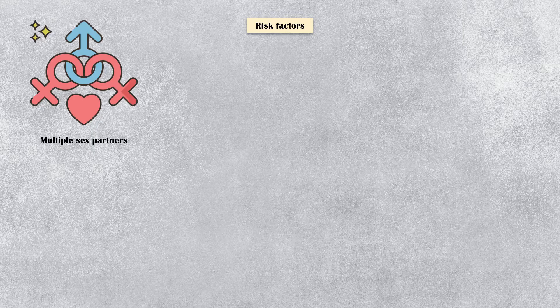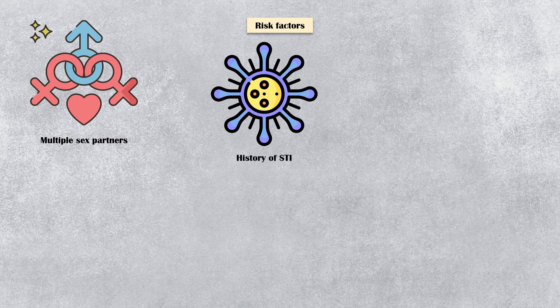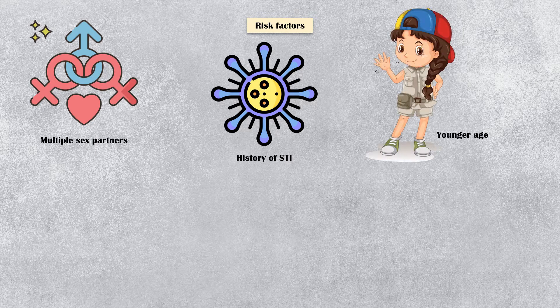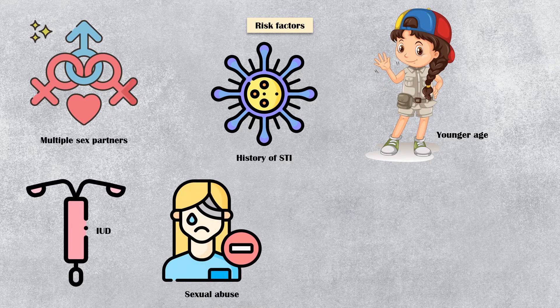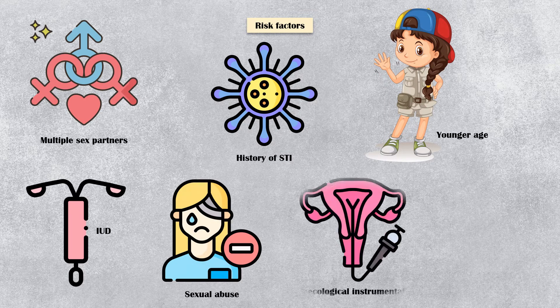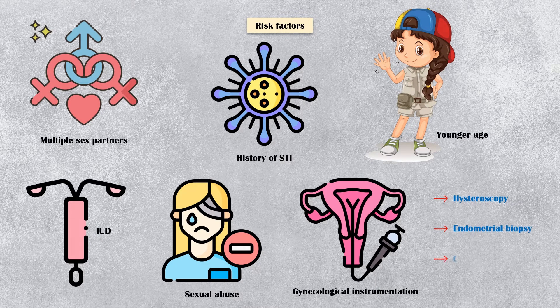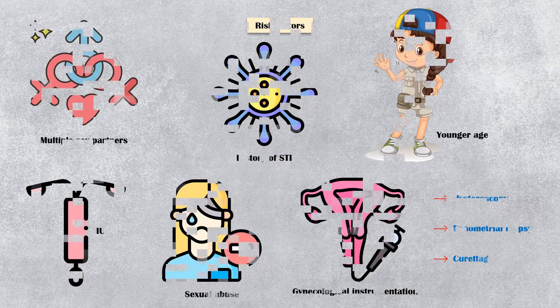Risk factors include having multiple sexual partners, history of sexually transmitted infections, sexual intercourse at a younger age, intrauterine devices, sexual abuse, and gynecological instrumentation including hysteroscopy, endometrial biopsy, and curettage. Most cases of pelvic inflammatory disease occur in two stages.